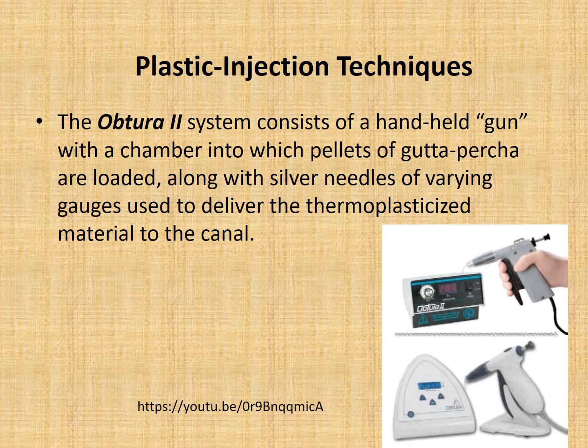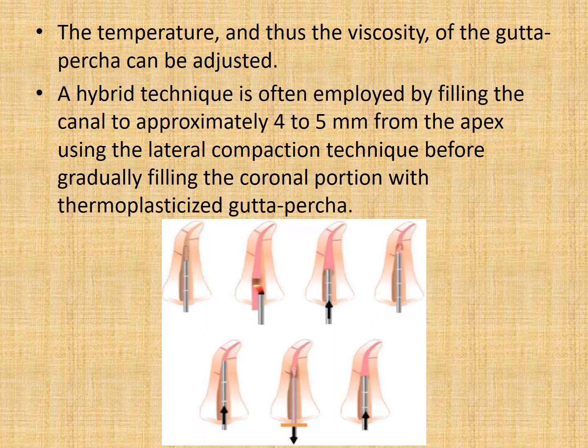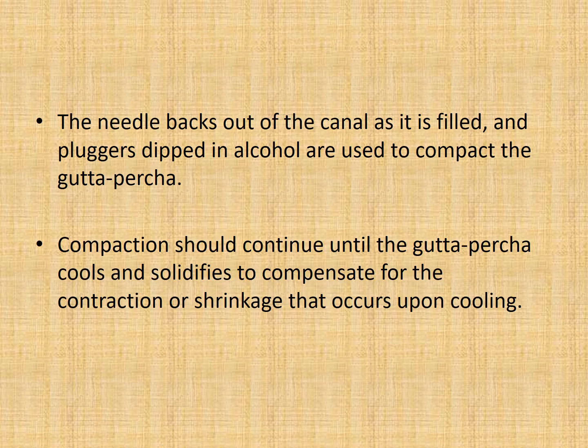Moving on to plastic injection techniques, the Obtura II system consists of a handheld gun with a chamber into which pellets of gutta percha are loaded, and silver needles of varying gauges to deliver the thermoplasticized material into the canal. The temperature and viscosity of gutta percha can be adjusted in this device. It is a hybrid technique which employs filling the canal approximately 4-5 mm from the apex using lateral compaction before gradually filling the coronal portion with thermoplasticized gutta percha. The needle backs out of the canal as it is filled, and pluggers dipped in alcohol are used to compact the gutta percha. Compaction should continue until the gutta percha cools and solidifies, to compensate for contraction or shrinkage that occurs upon cooling.